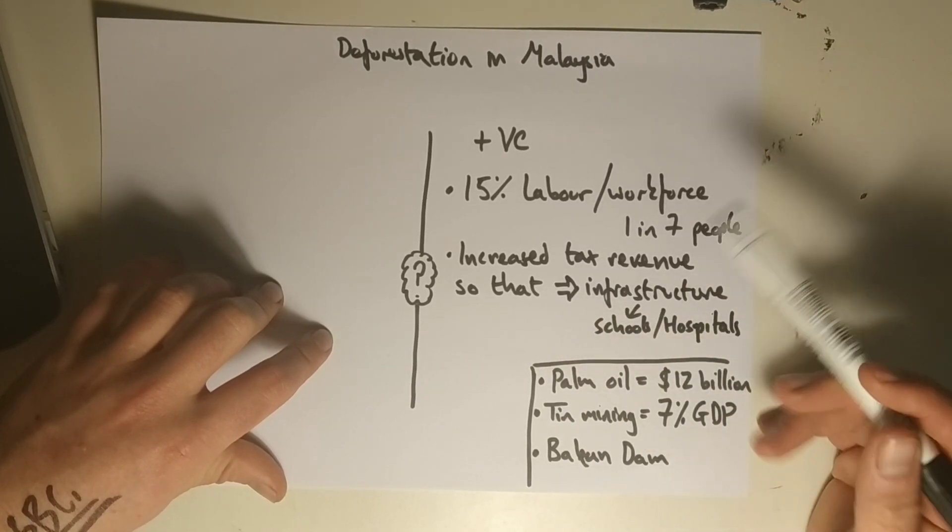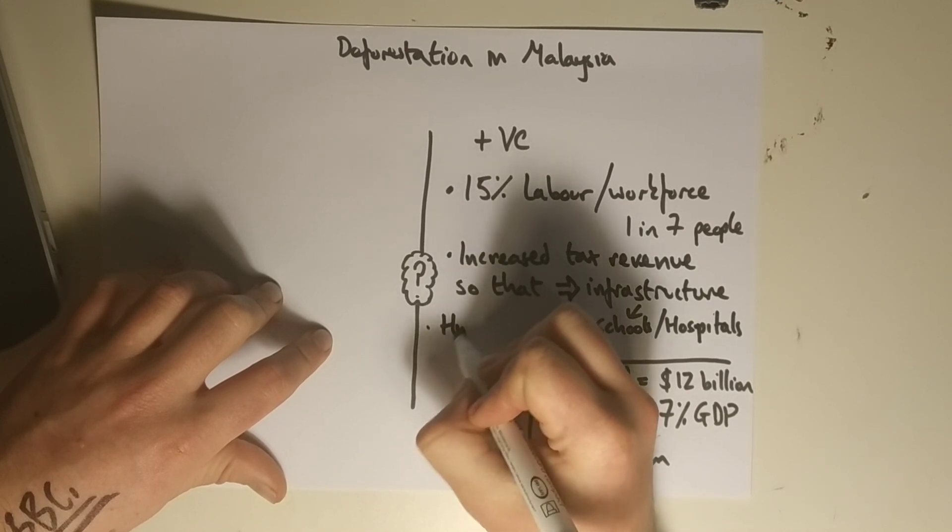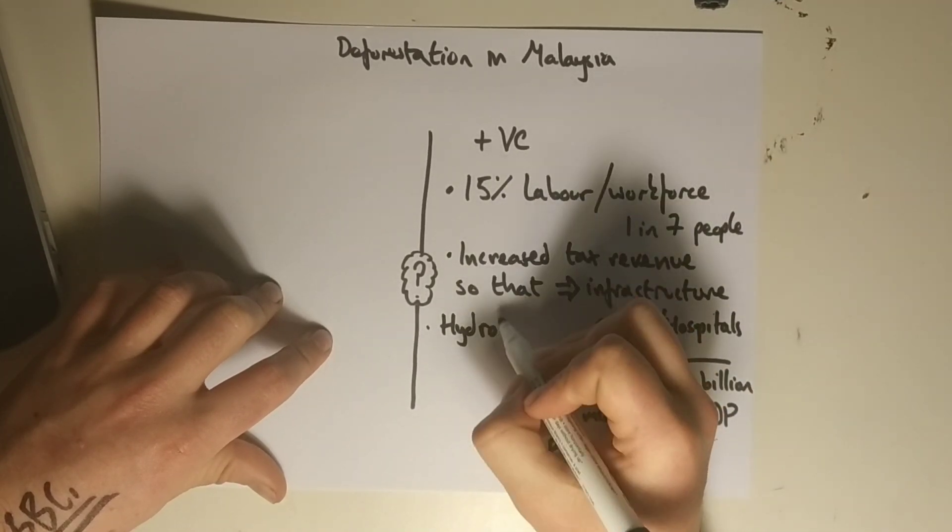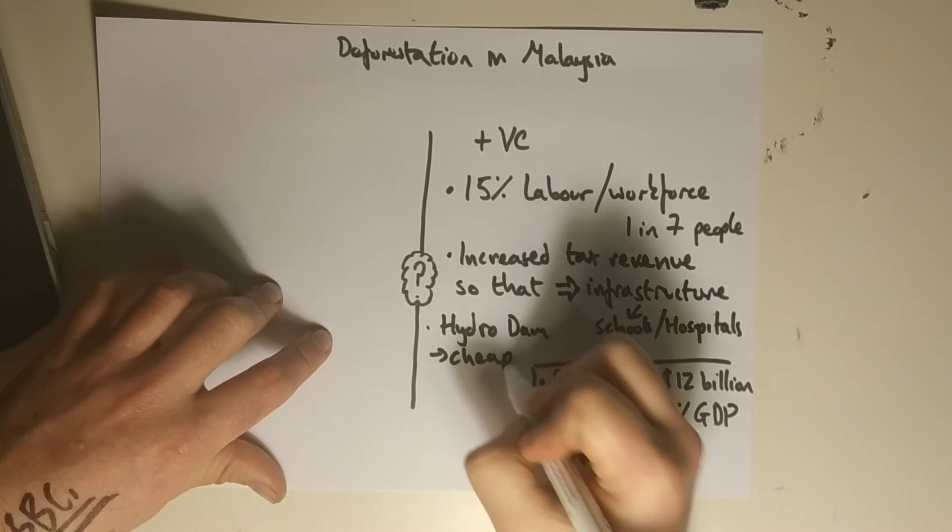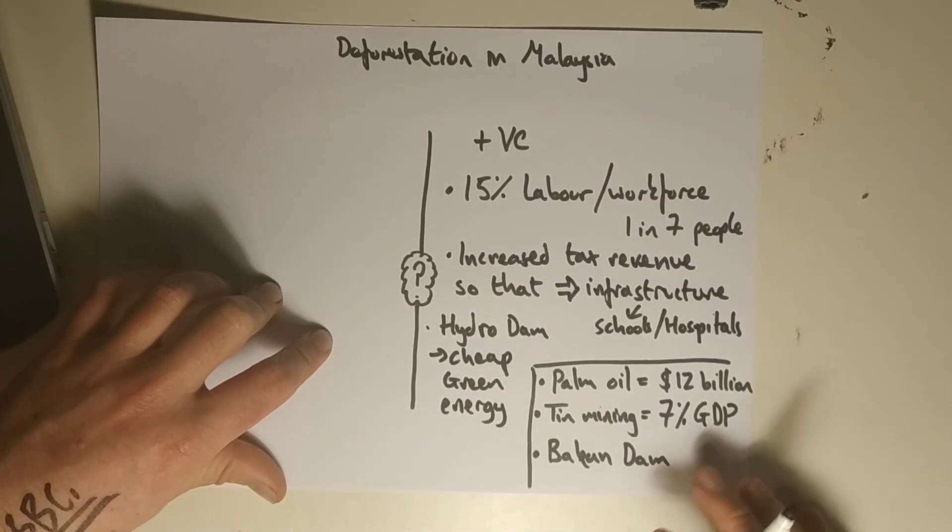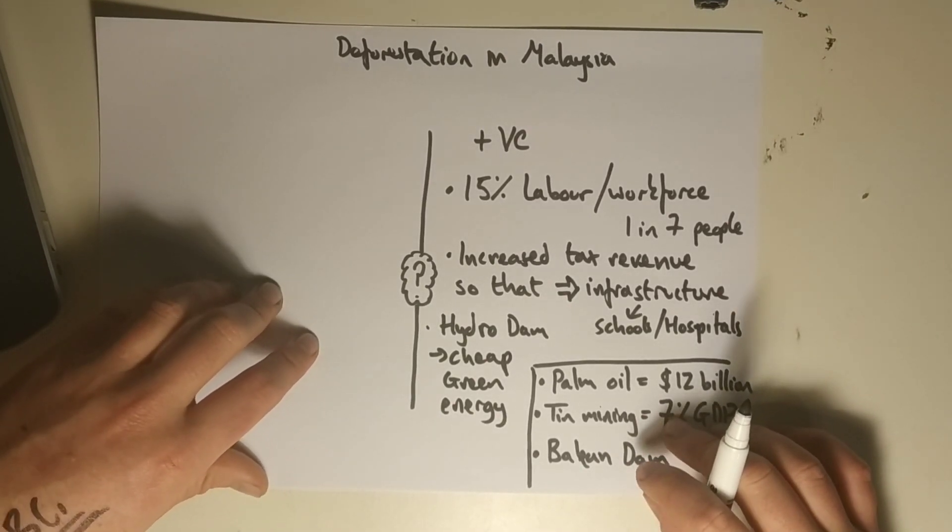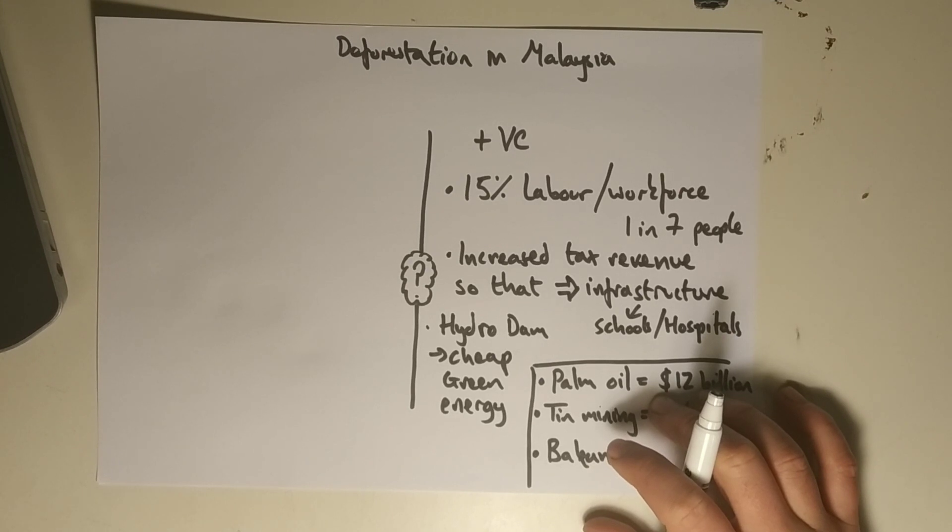And then finally, the Bakun dam, a hydroelectric dam, is given cheap green energy. Absolutely critical that you as geographers really realize that those are some of the positives of what's happened at deforestation in Malaysia. And because of that, things like the HDI, human development index, have been improving year on year in Malaysia. It's really important, like when we look at Shell in Nigeria, to show balance in the ideas that we're thinking about.